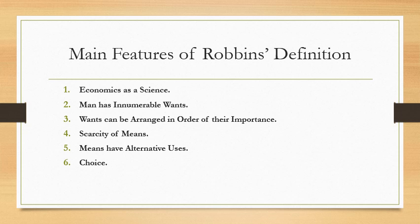Main Features of Robin's Definition. First, Economics as a Science. Professor Robin has raised economics to the status of science. By science, he meant that economics possesses all the features of science, i.e., it establishes relationship between cause and effect and it helps in the analysis of the events which have economic repercussions.